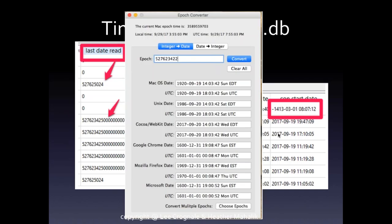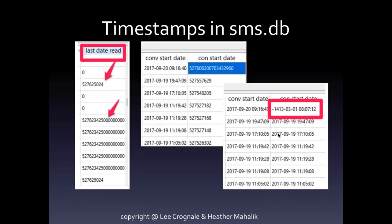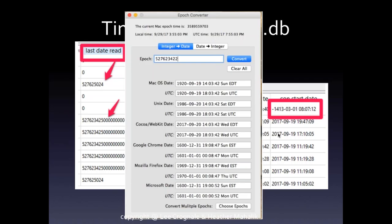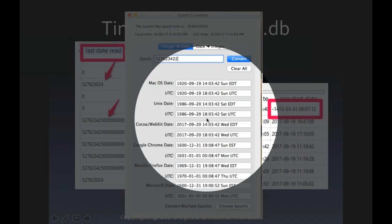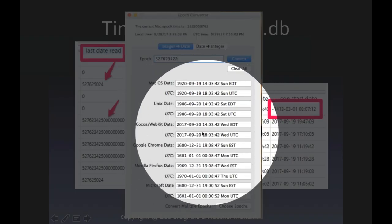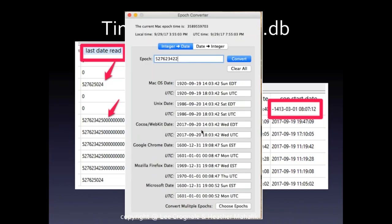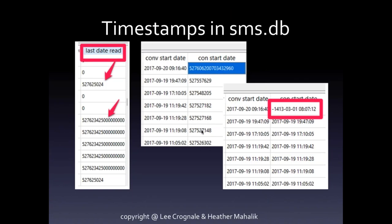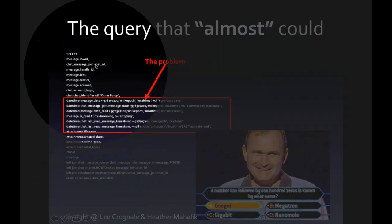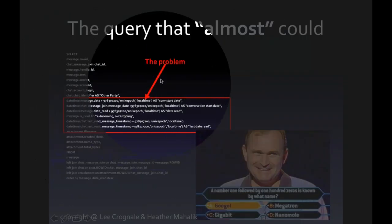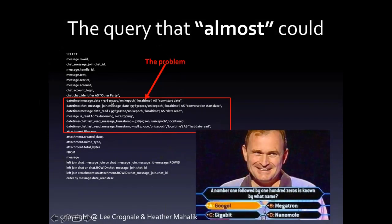At this point I reached out to Sarah Edwards — she is my Mac go-to person. I asked her what the heck is this date timestamp. She recommended I use the EPOC converter from BlackBag — it's free and works really well. I started putting in these date timestamps, and the converter was showing 9-20-2017, so it was actually working. However, the tool wasn't helping me in my query. I didn't want to manually copy and paste each date. I needed my query to accept that it may be zero, it may be 18 digits, or it may be 9 digits in length.